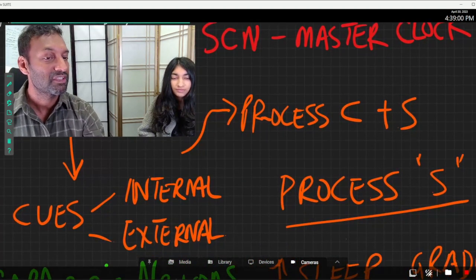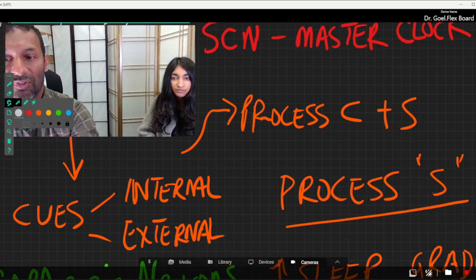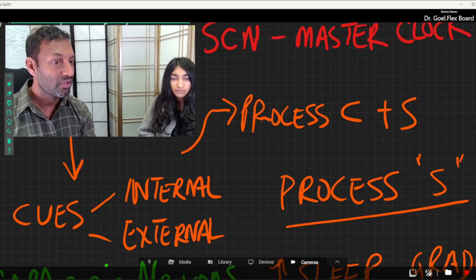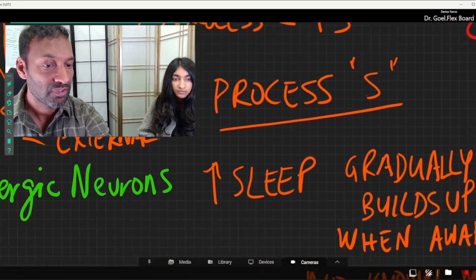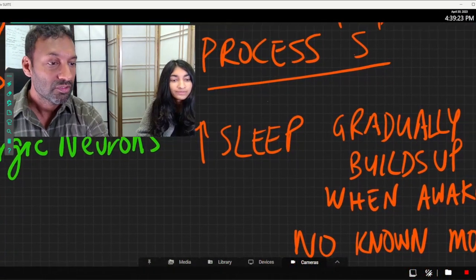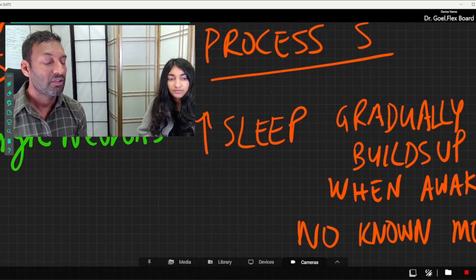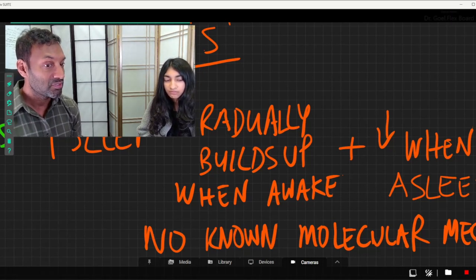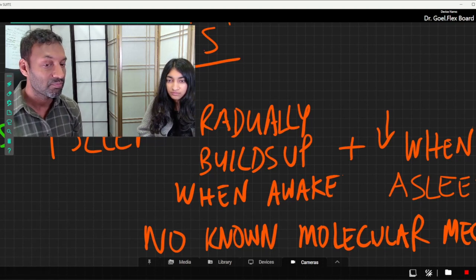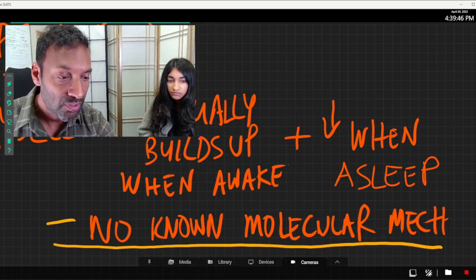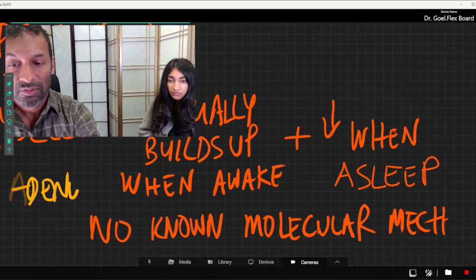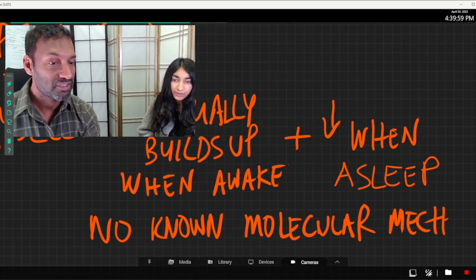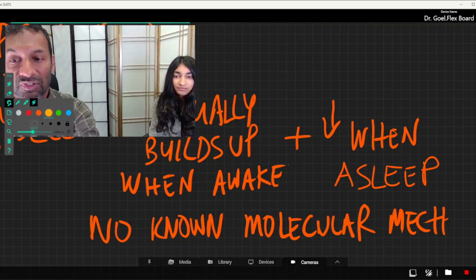Let's talk about that. There's really two processes, what we call process C and process S. So let's talk about process S first. So basically it looks like there's something that happens with a type, there appears to be some type of molecule that gradually builds up when we're awake. And it makes you sleepy. And then this molecule also decreases when you're asleep. We don't exactly know what the molecular mechanism is. We don't really know. We think it could be adenosine, but we're not a hundred percent sure. But it's called process S. I guess for process sleep, something like that. But that's kind of interesting.